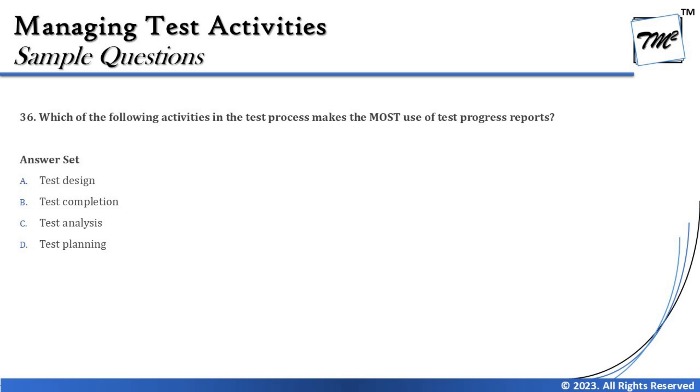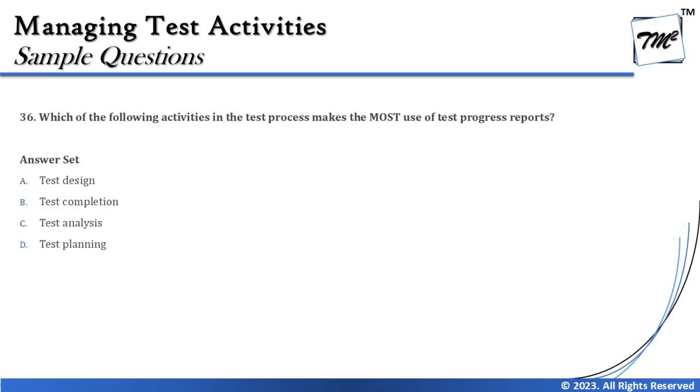Question 36 asks: which of the following activities in the test process makes the most use of test progress reports? Two important things to note — we need to recall what a test progress report is, and second, the word 'most' in the question means there could be multiple valid answers, but we need to find which one utilizes it the most. The options are: design, completion, analysis, and plan.